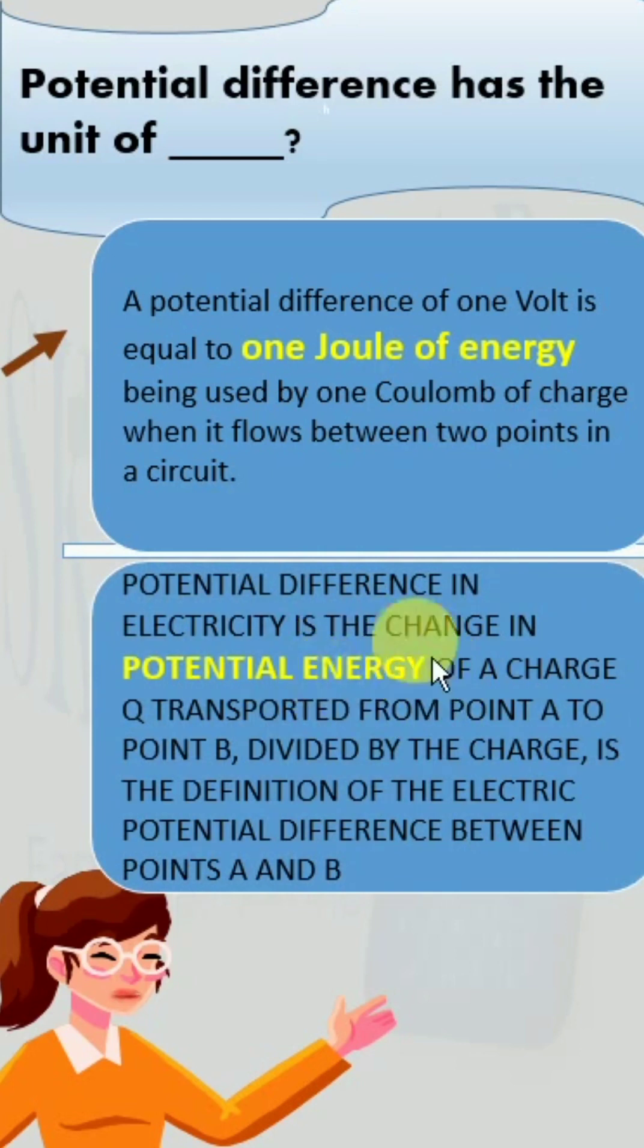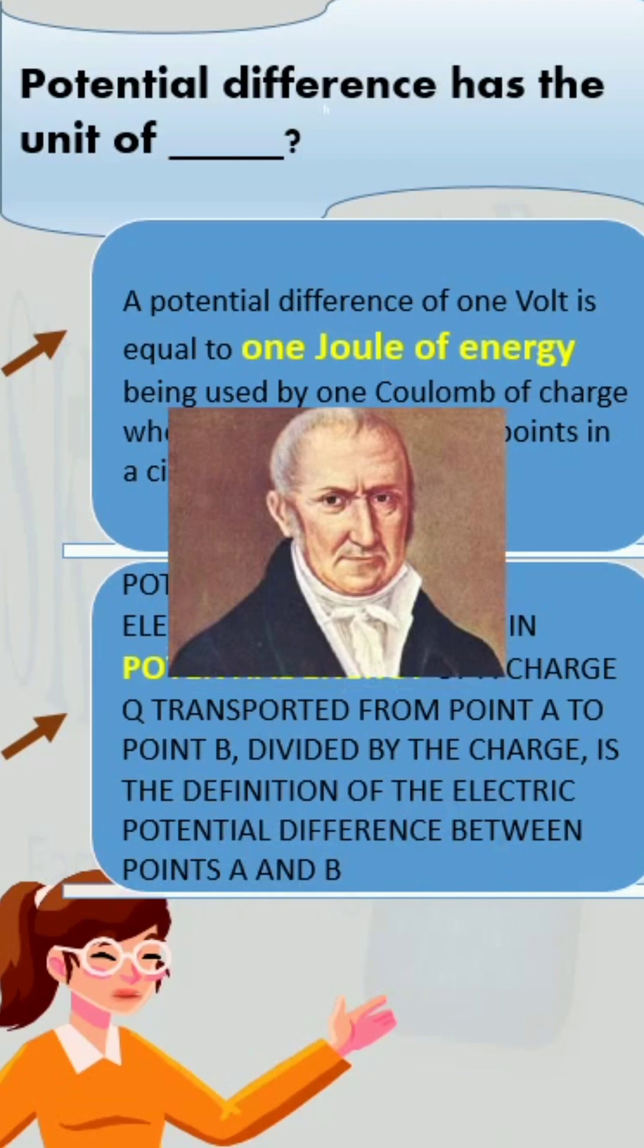The second definition says potential difference in electricity is the change in potential energy of a charge Q transported from point A to point B divided by the charge. This is the definition of electric potential difference between points A and B. Here you see that in both definitions the word energy appears.